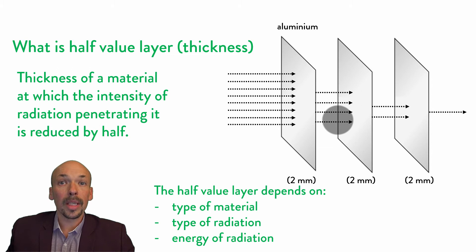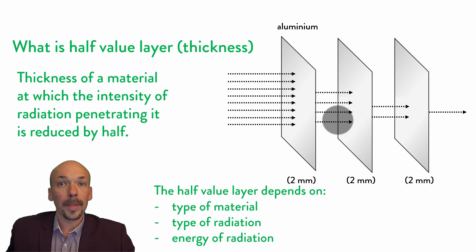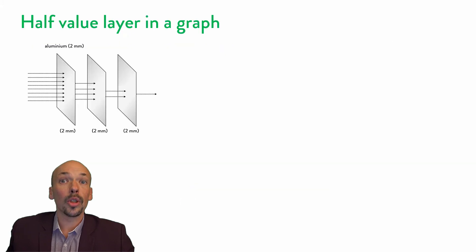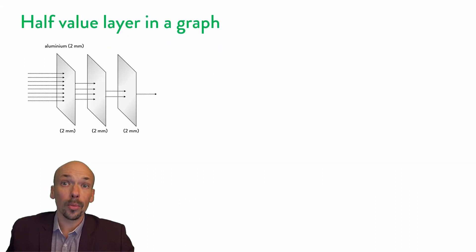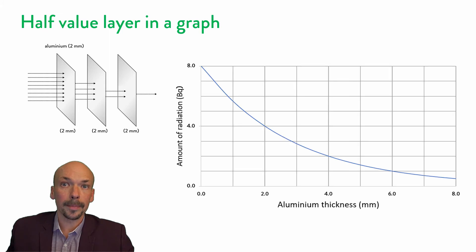So even if you have the same kind of radiation but the radiation has more energy, the half value thickness will be different. Now let's see how this will look like in a graph. In this situation, the half value layer is 2 mm. If we put it in a graph, it will look like this.